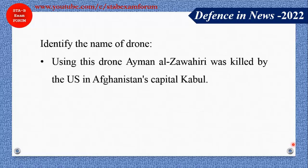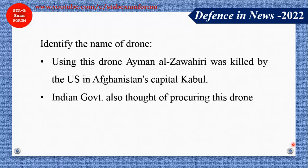The next question: using this drone, Ayman al-Zawahiri was killed in Afghanistan's capital Kabul, and the Indian government has also considered procuring this drone. What is the name of this drone? It's the MQ-9 Reaper drone. This is a very popular drone used by the US, and it was used to kill Ayman al-Zawahiri. Just note it: MQ-9 Reaper drone.